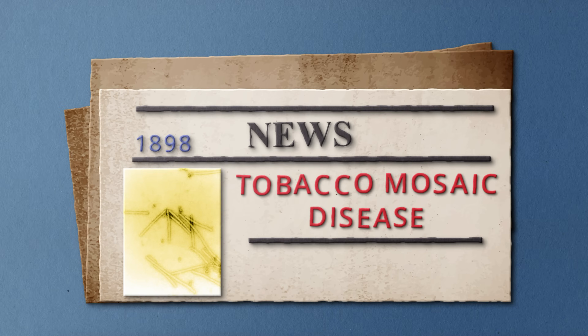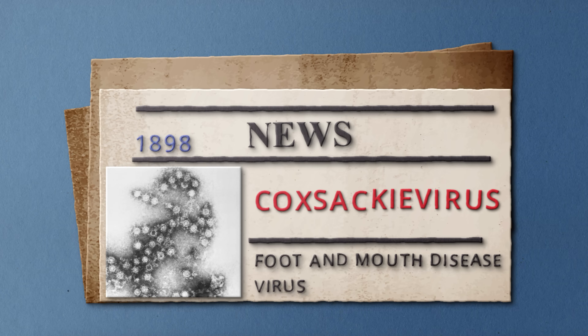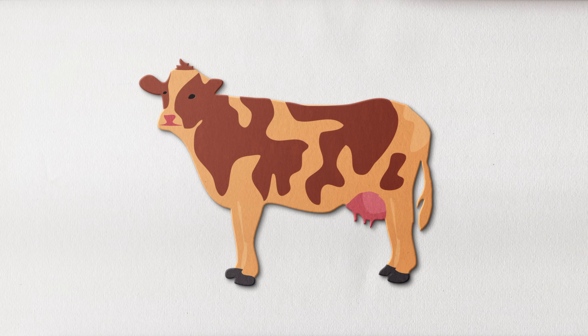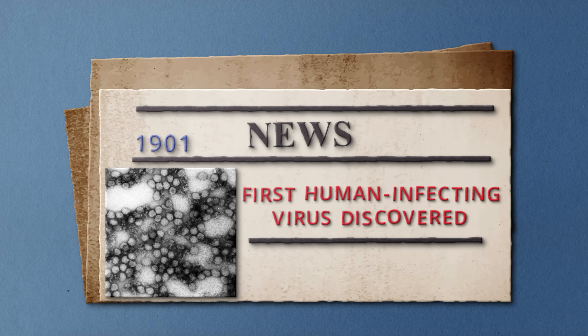After the discovery of tobacco mosaic virus, more discoveries were made. Scientists discovered the foot and mouth disease virus in 1898 — a disease that causes blisters to form in the mouth and feet of cows and leads to walking difficulties. It was only three years later, in 1901, that the first human-infecting virus was discovered.